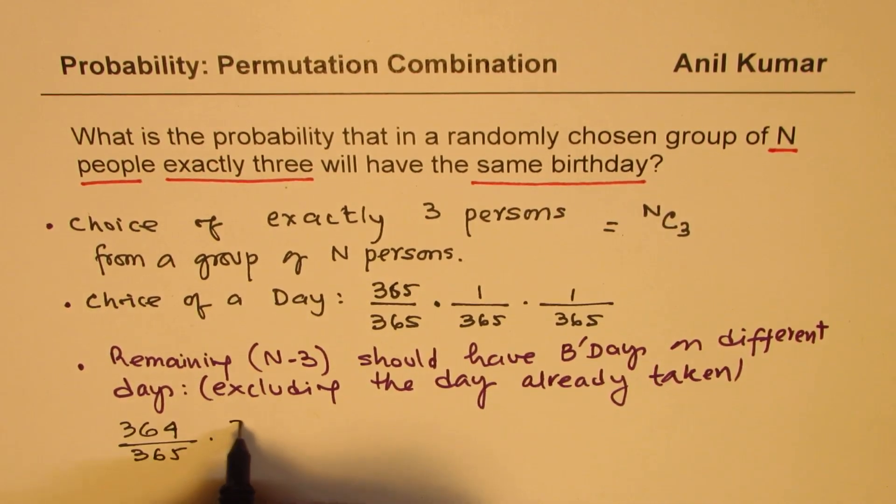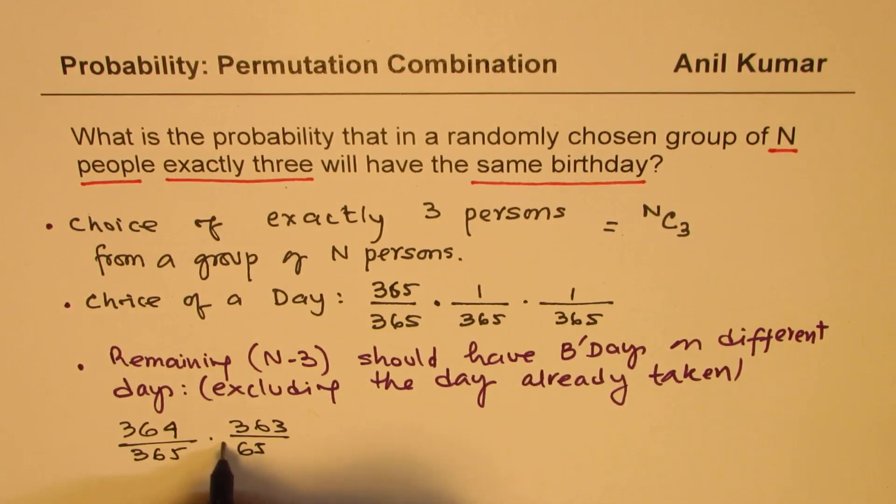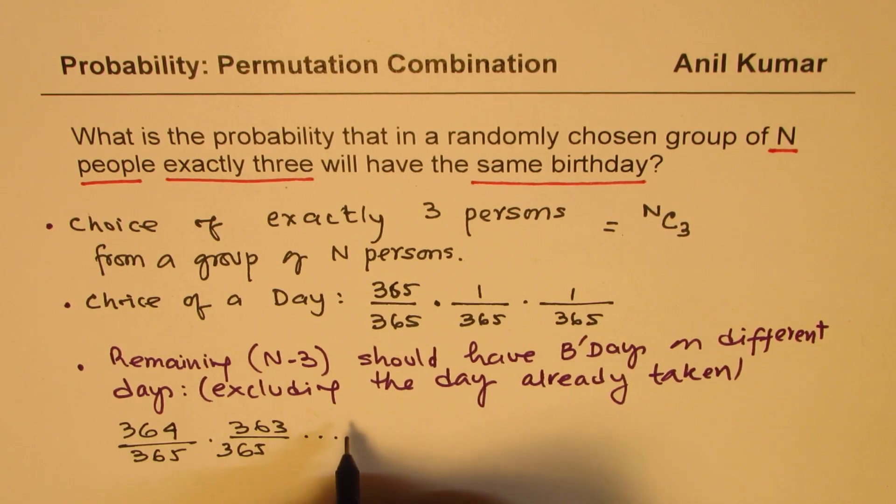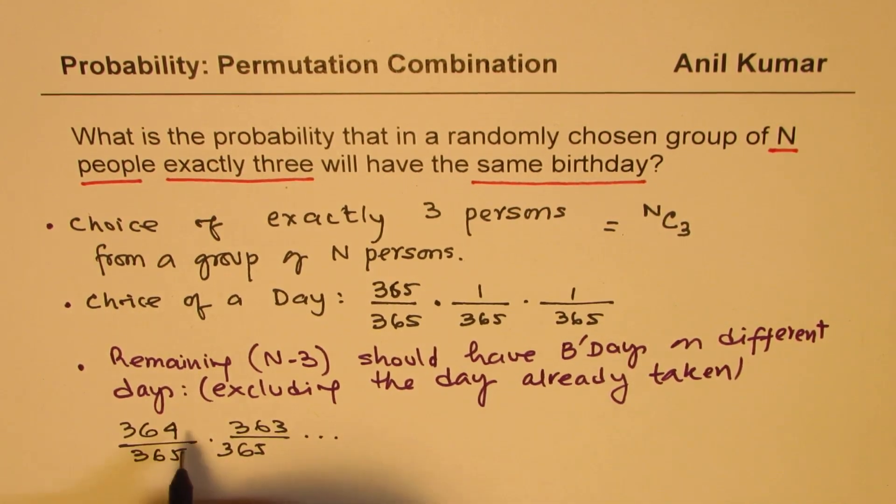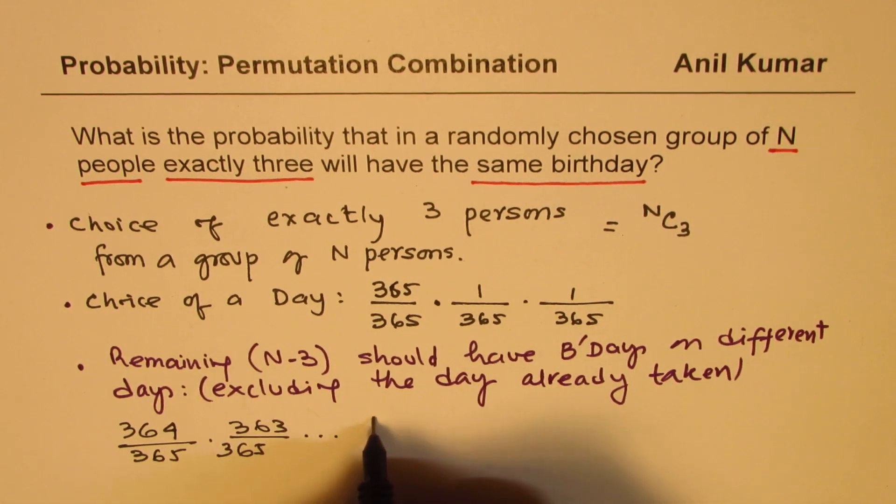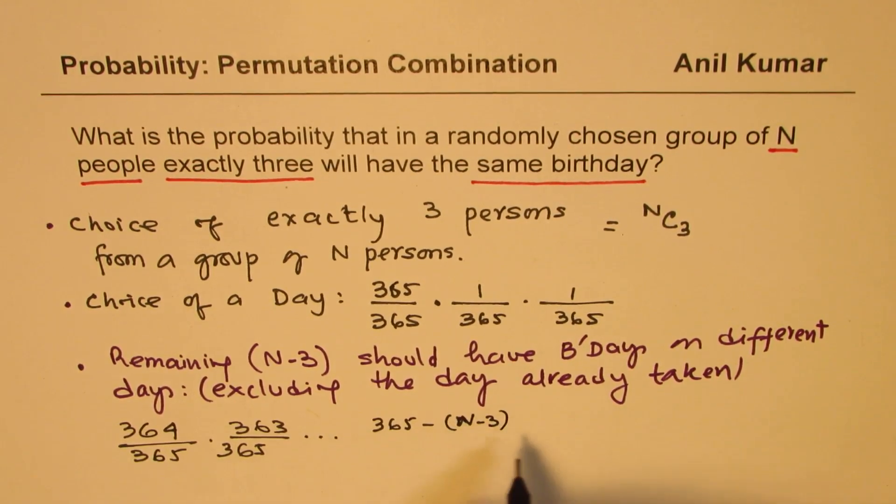For the next person, it will be 363 over 365, and so on. The last person in this group is 365 minus n minus 3. Because this is first person, 365 minus 1. So here it will be 365 minus n minus 3 for the last person, over 365. There are n minus 3 persons in this group.